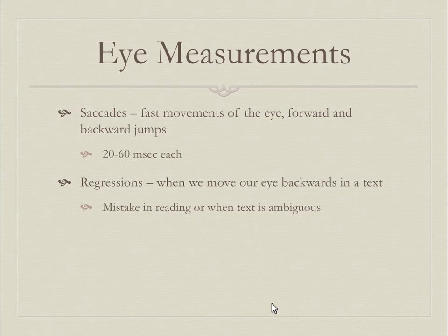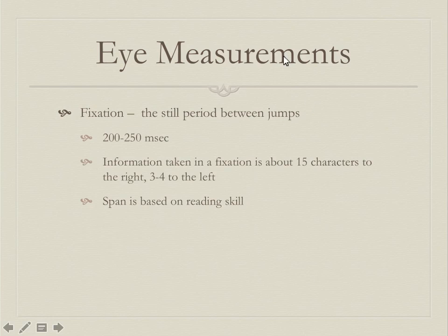Our eyes move both forwards and backwards. There is a fixation — a still period between the jumps — lasting about 200 to 250 milliseconds. During a fixation, you take in about 15 characters to the right and 3 to 4 characters to the left, for languages read left to right. That window is called your span, and it's based on reading skill and working memory — better readers have a wider span.